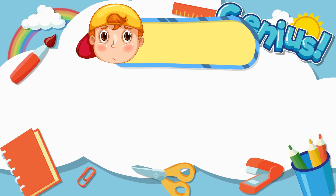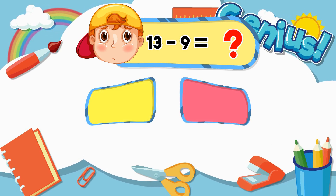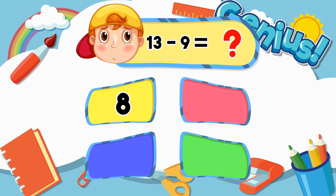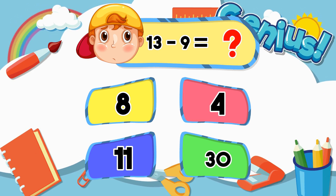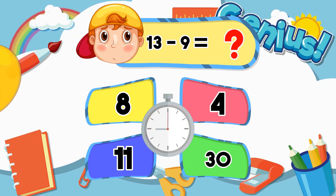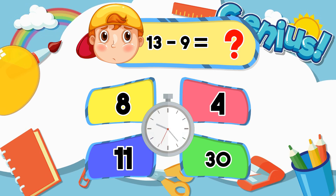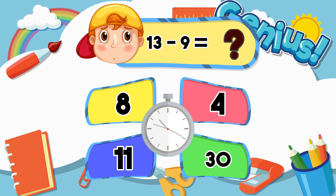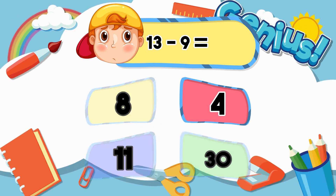What is 13 minus 9? 8, 4, 11, 30. Answer: 4.